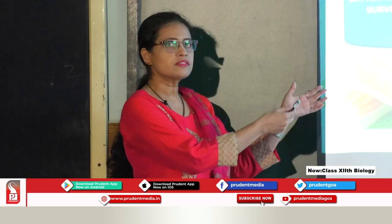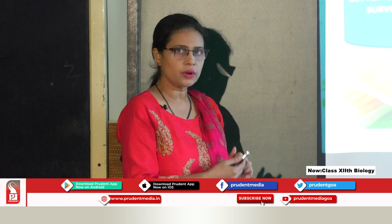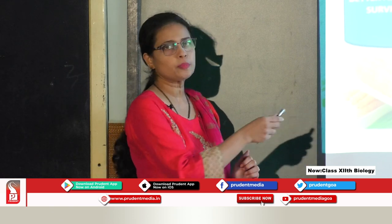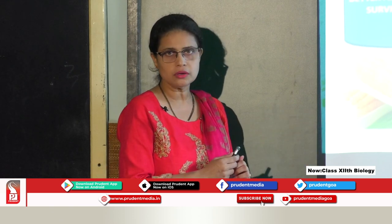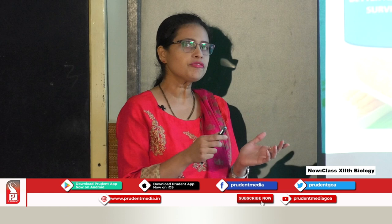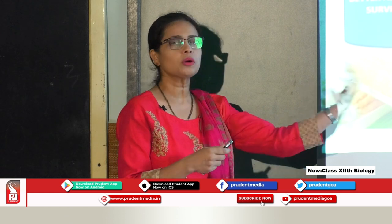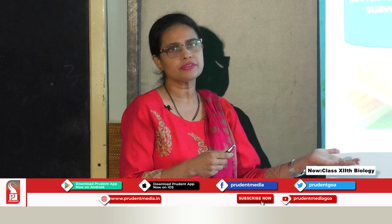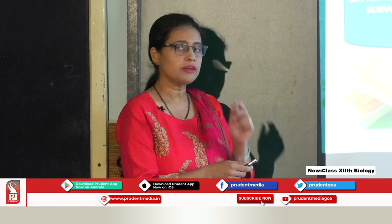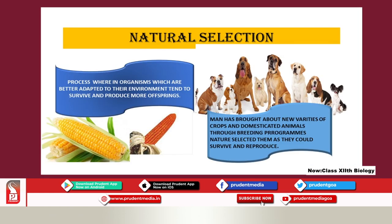That means nature has played a great role, and that is what is known as natural selection. Natural selection is a process wherein organisms which are better adapted to their environment tend to survive and produce more offspring. So it is the nature which plays an important role in selecting new varieties. If they are unfit they would not survive, but if they are fit — not only in survival but also in leaving behind progeny and increasing their population — that is natural selection.